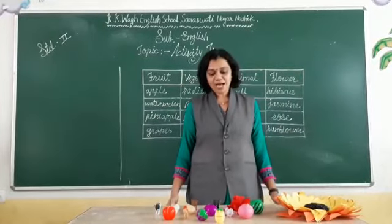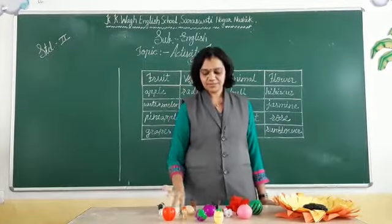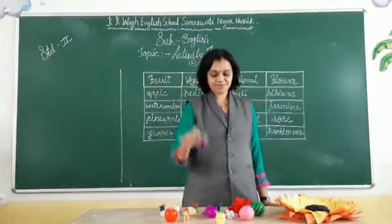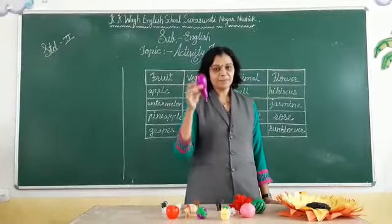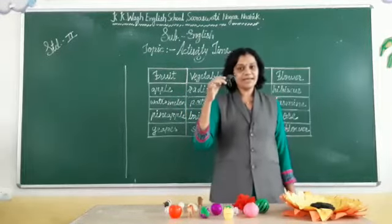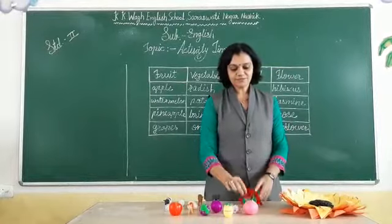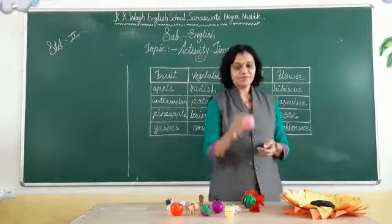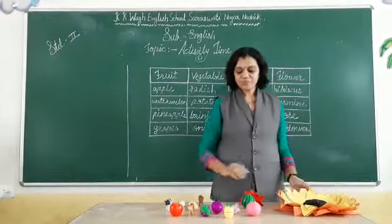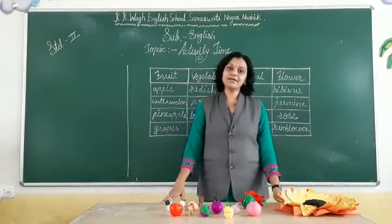So students, I have so many things over here like cow, apple, radish, tiger, grapes, pineapple, brinjal, potato, bull, elephant, hibiscus, watermelon, rose, onion, jasmine, and sunflower. Today we are going to sort out or classify all these things according to their group.